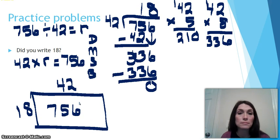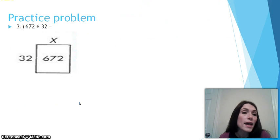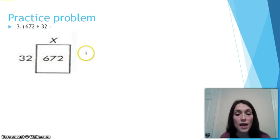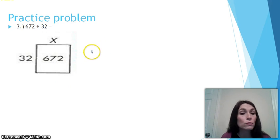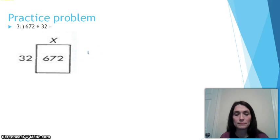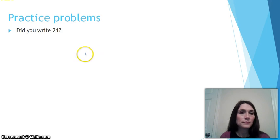Let's look at practice problem number 3. Our practice problem is 672 divided by 32, and they've already shown an area model here for us to help us visualize what this problem looks like. Please go ahead and do the division, and press play whenever you're ready to check your answer with mine. Did you write 21? Well, let's check and see.